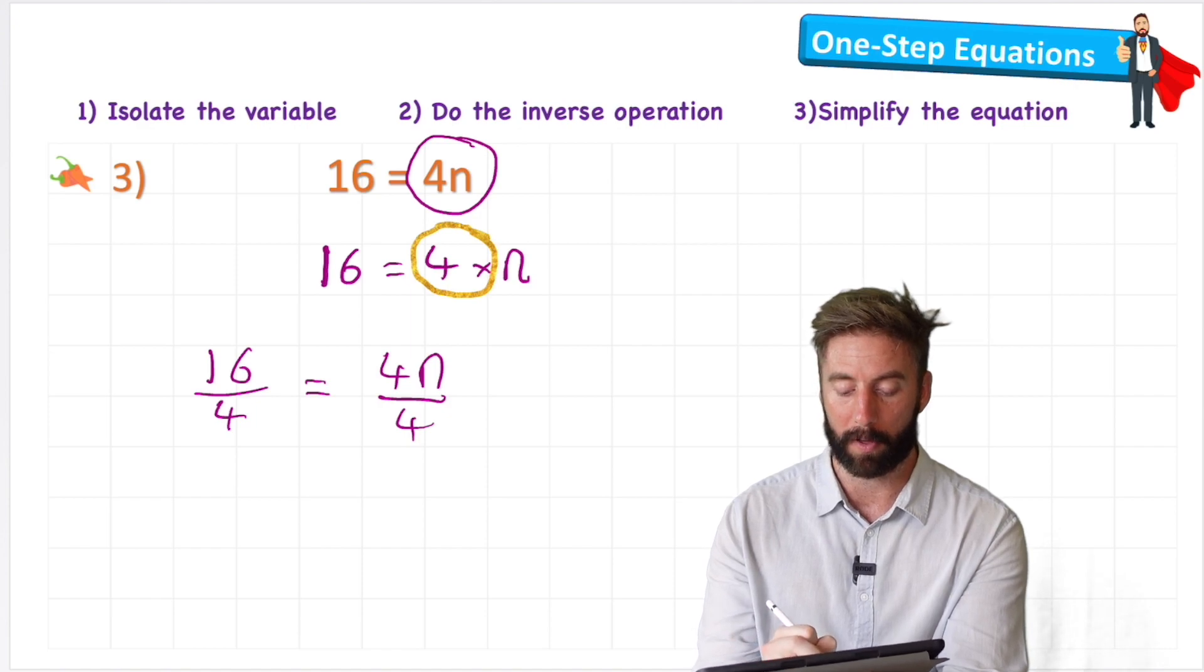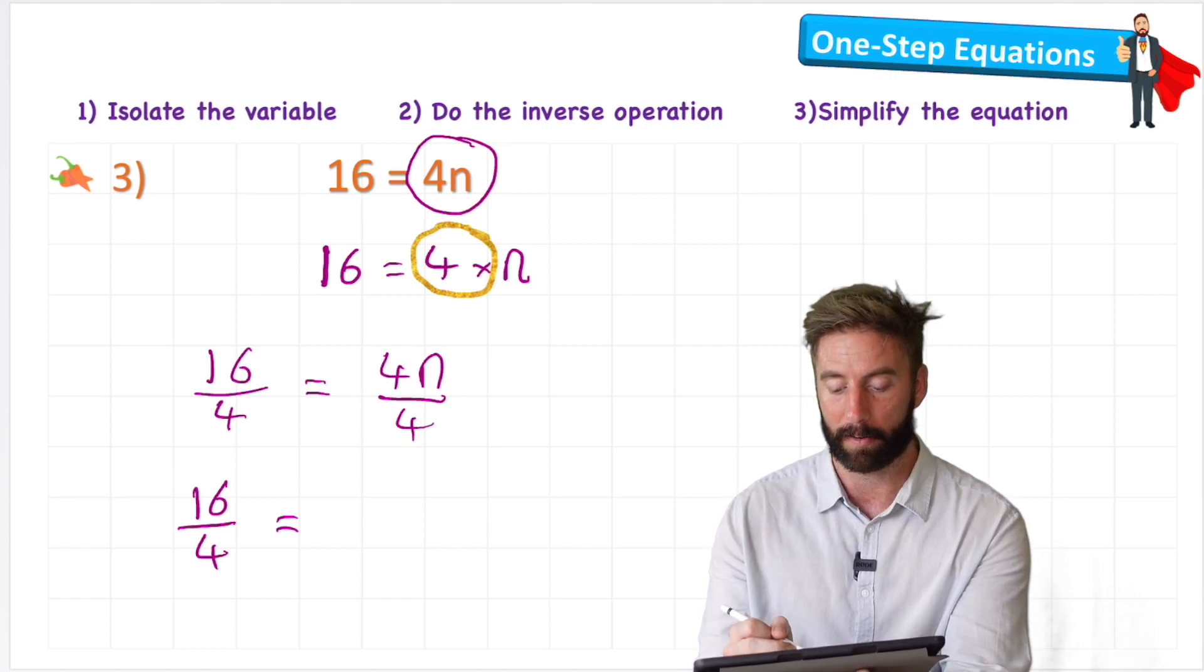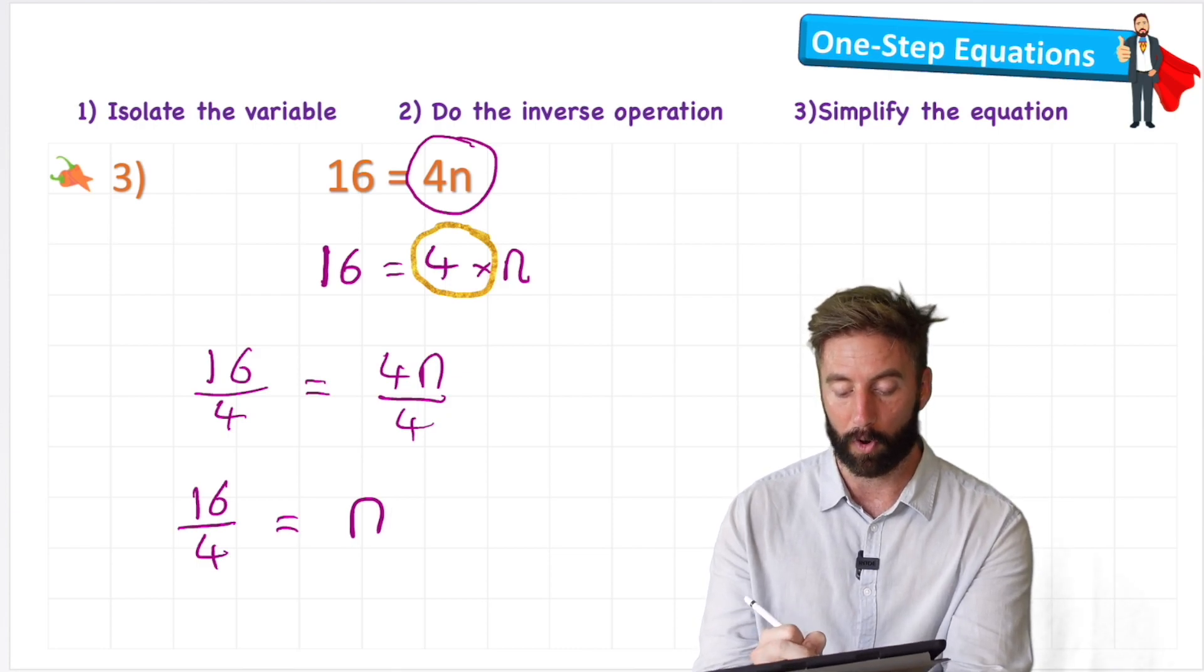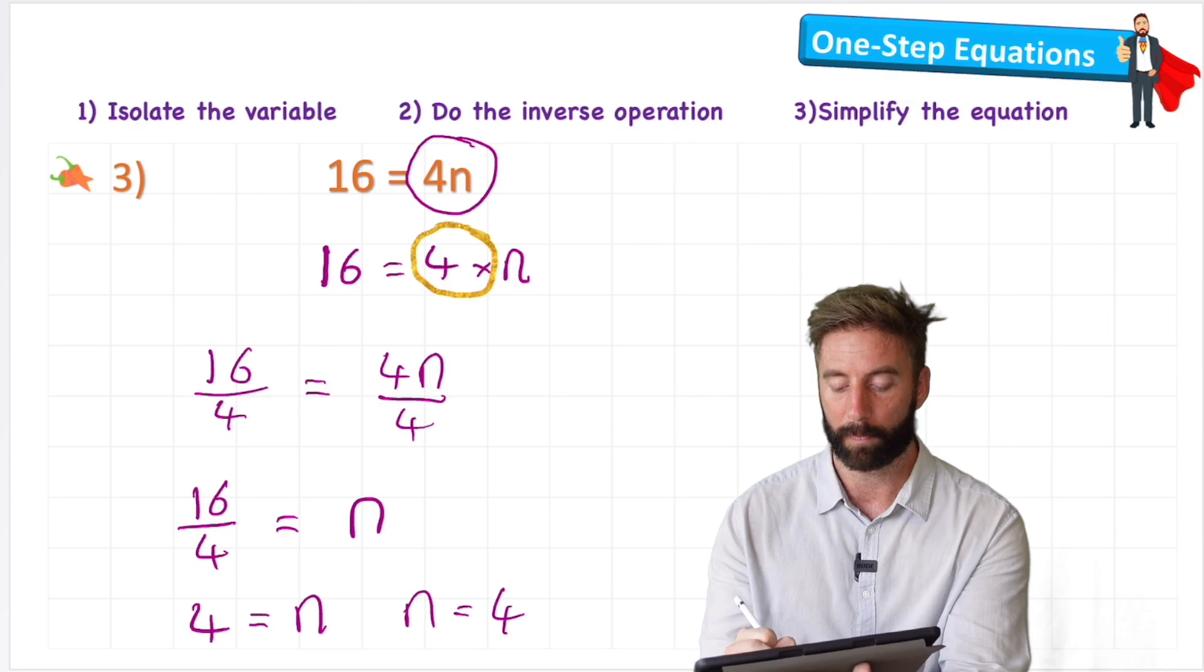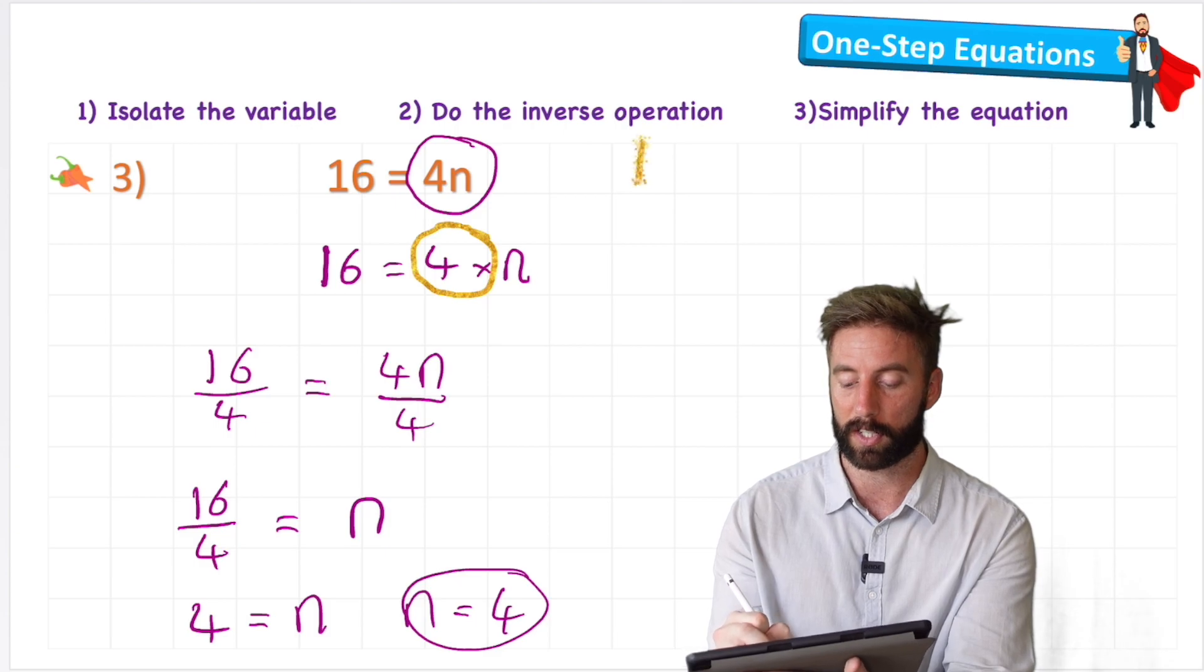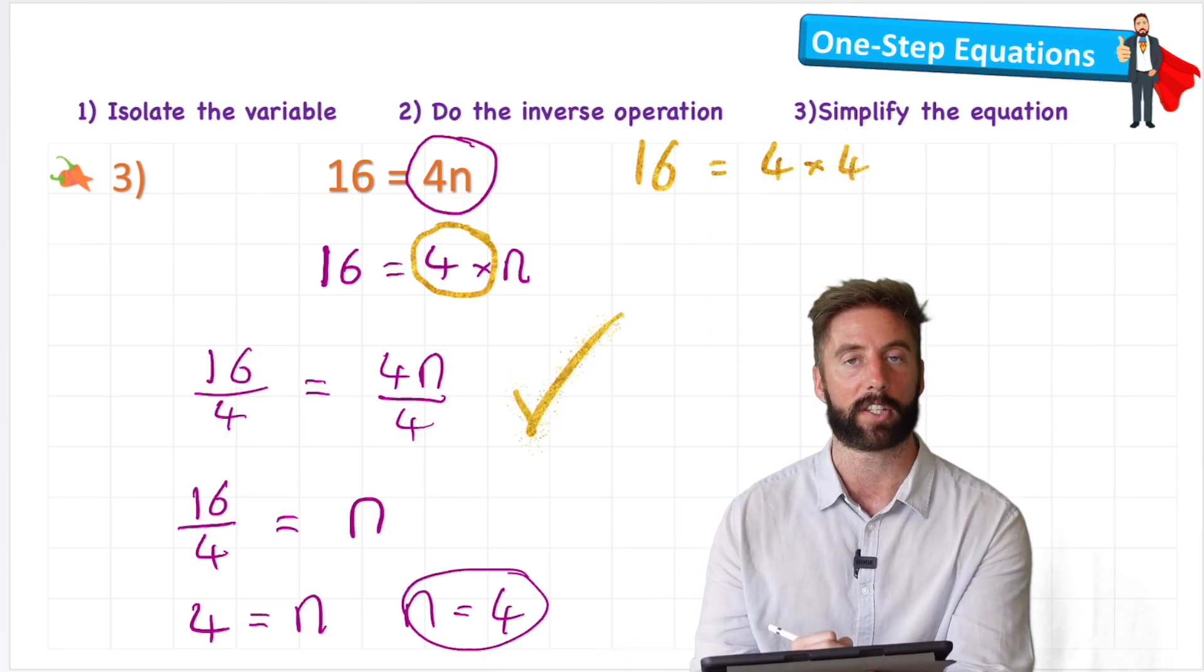Well, I can put my first part 16 over 4 equals, so now my 4 times n, we can start by my dividing by 4. So I'm equaling n. So 16 over 4 equals n. 16 divided by 4 is 4. So 4 equals n or n equals 4. Let's substitute it back in and see if we get the right answer then. So 16 equals 4 times 4. 4 times 4 is 16. Give ourselves a tick.